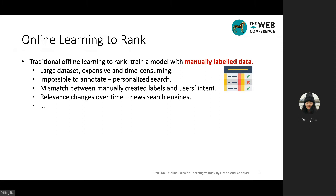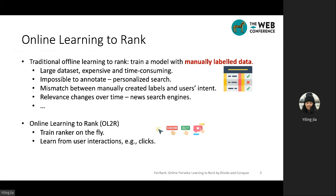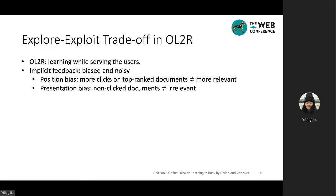Traditional offline Learning to Rank trains a model with manually labeled data, and there are several drawbacks. The first one is it needs a large dataset, which is very expensive and time-consuming to construct, and the manually created labels may mismatch users' true information needs, not to mention users' intent may change over time. Online Learning to Rank eliminates such heavy dependency on explicit relevance annotation by directly optimizing the ranker from users' implicit feedback on the fly. The key difference is that Online Learning to Rank needs to serve while learning from its presented rankings.